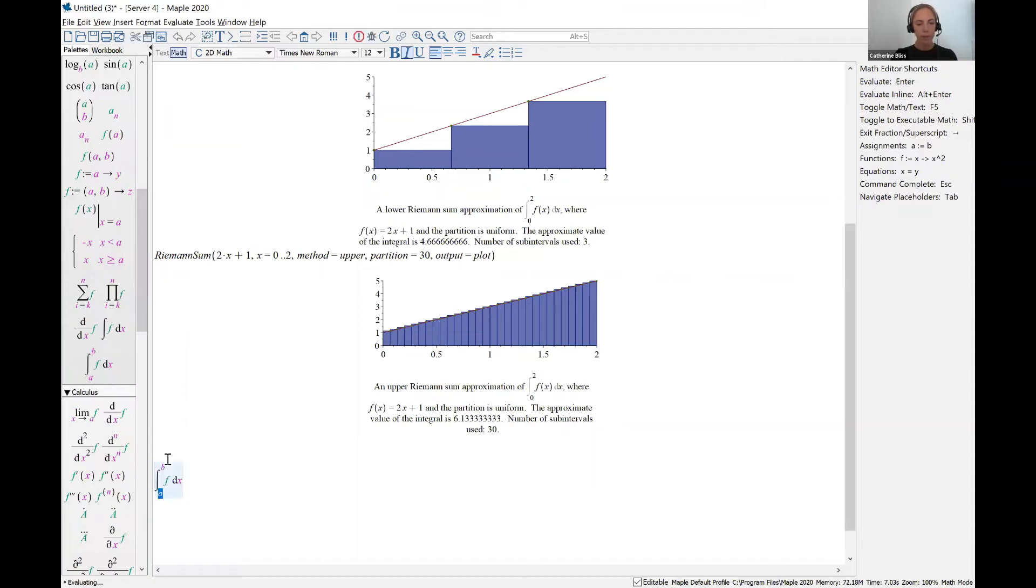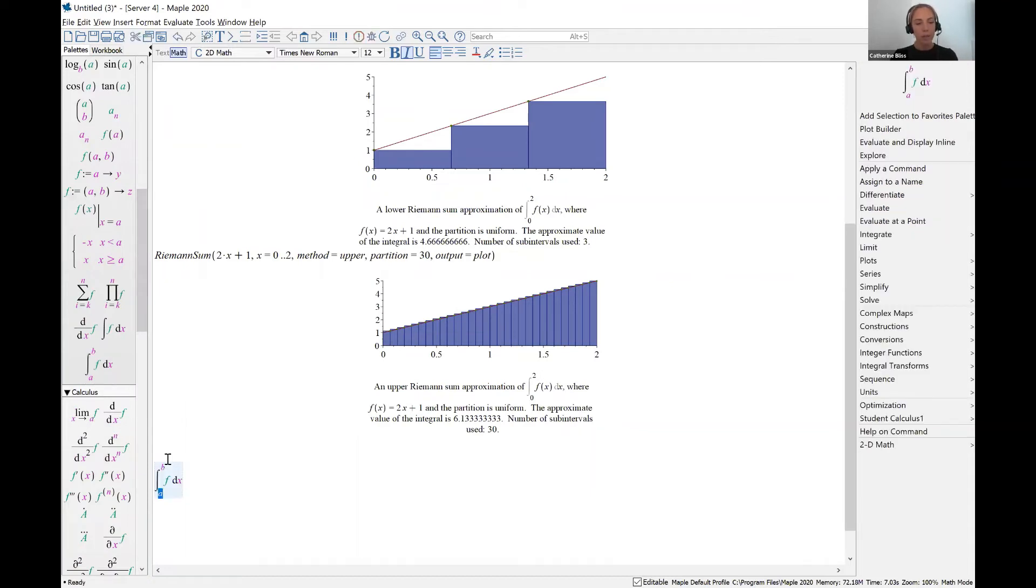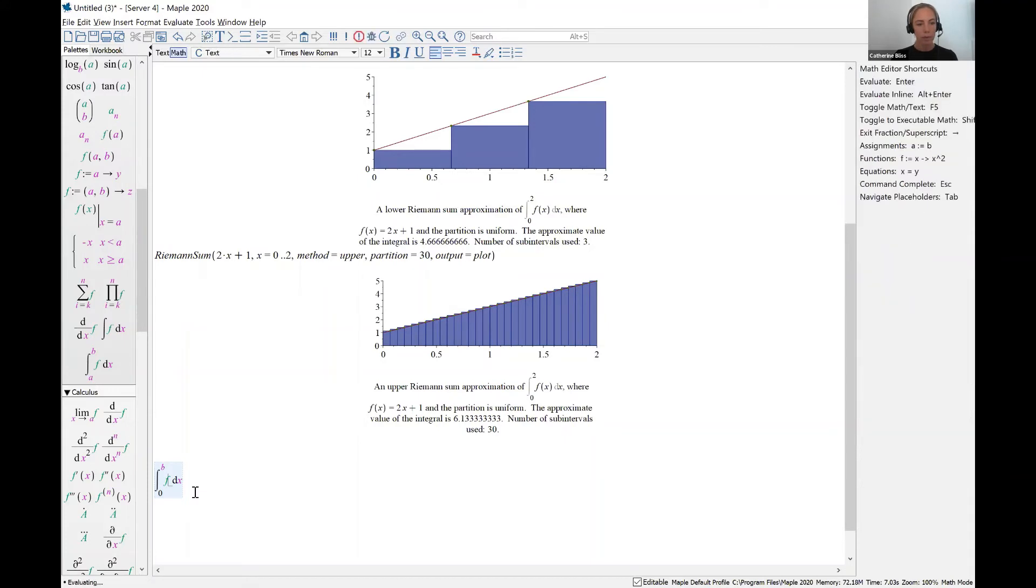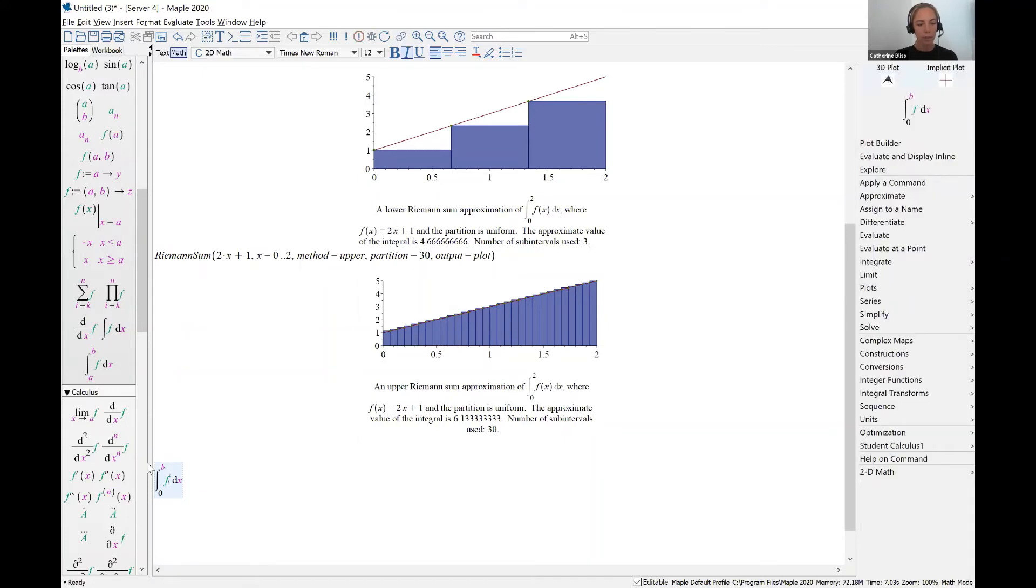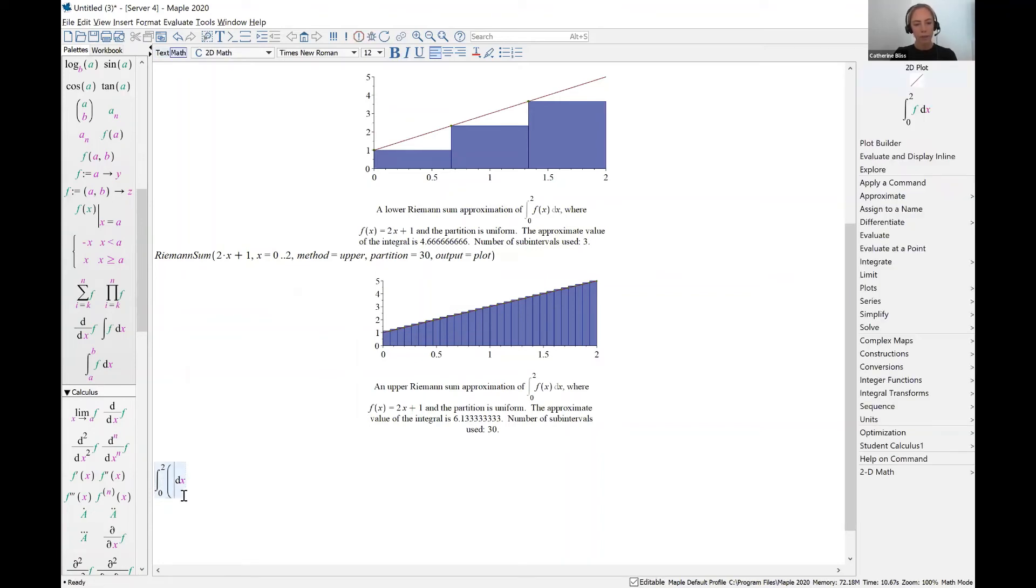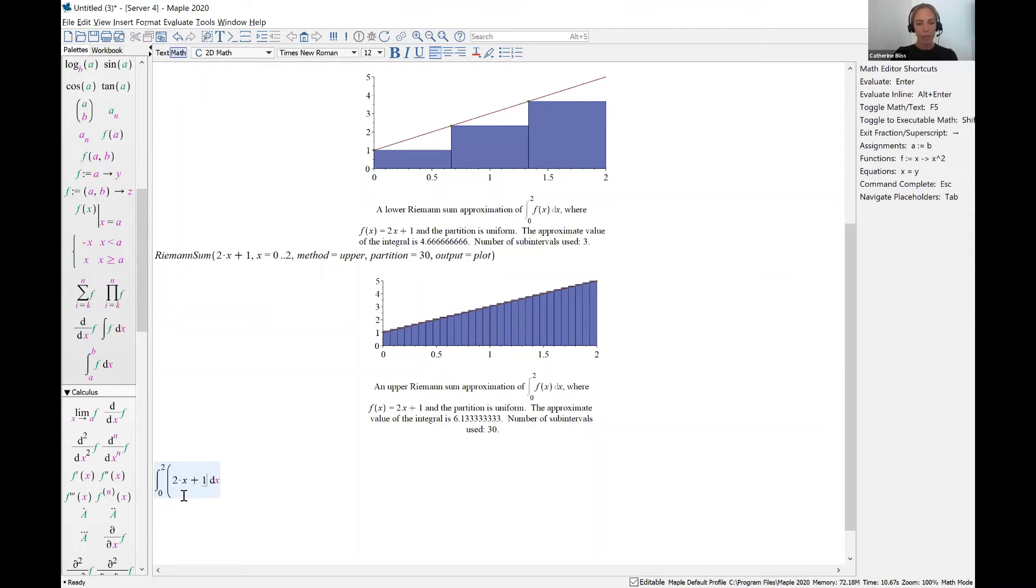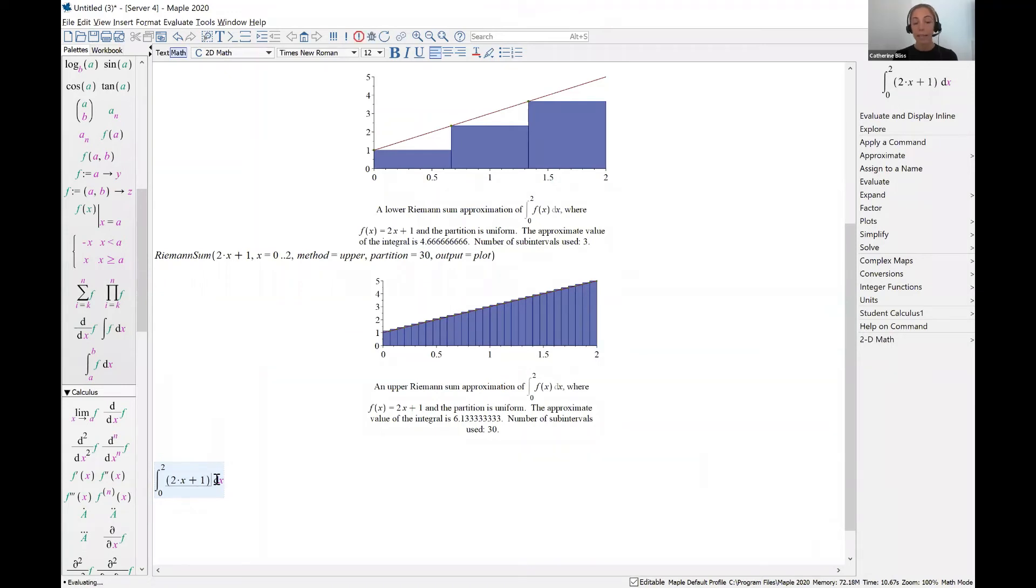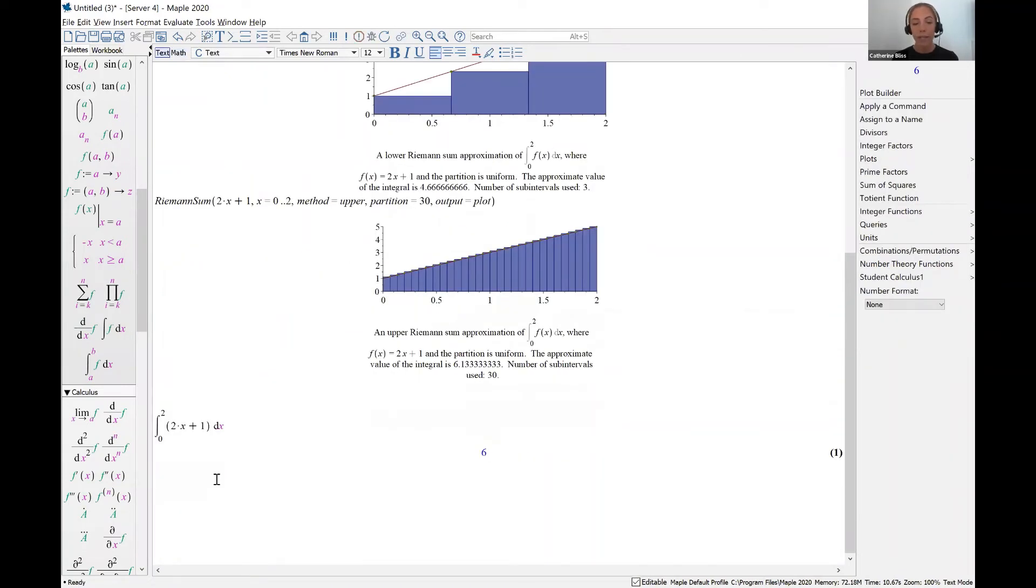I'm going to do the integral from x equals 0 up to x equals 2. And the function that I'm working on is 2 times x plus 1. And this is an integral with respect to x. And the exact value there is 6.